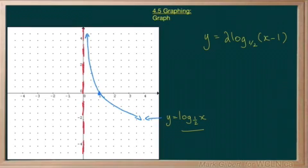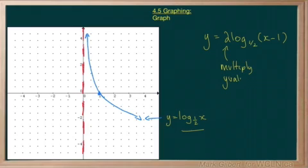We have some transformations here. That 2 — you're going to multiply y values by 2. And move the graph right 1.